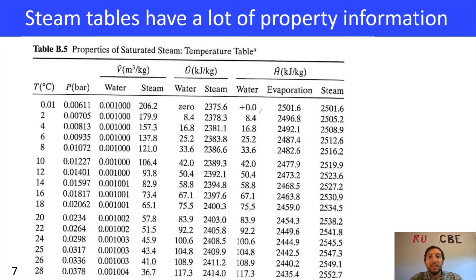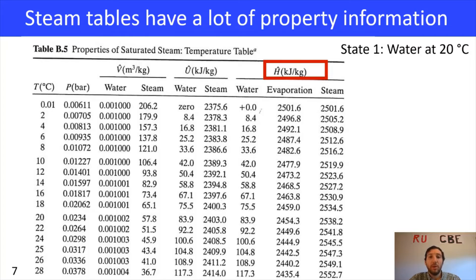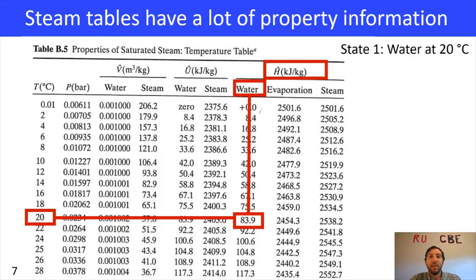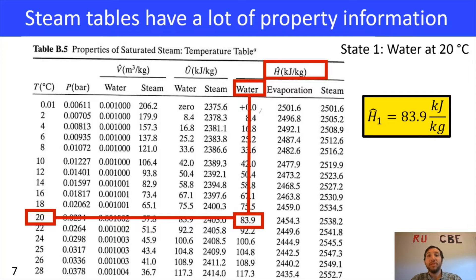On this slide I've got one of the steam tables where we're going to obtain information about our water. As a reminder, for state one we have water at 20 degrees Celsius. We're going to look for the enthalpy column, and since we're dealing with water we go to the water column. We're looking for a temperature of 20 degrees Celsius. Lining everything up, we see that 83.9 kilojoules per kilogram is water's enthalpy at state one.